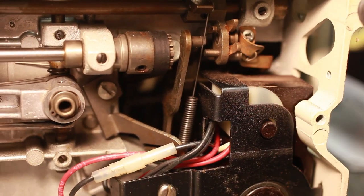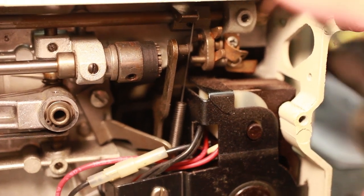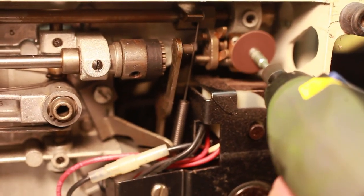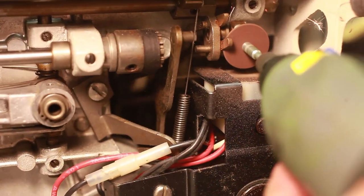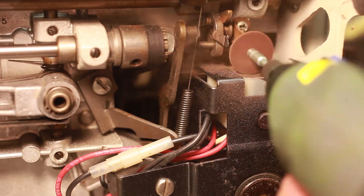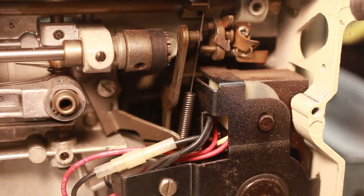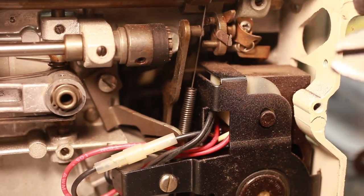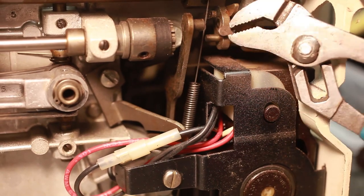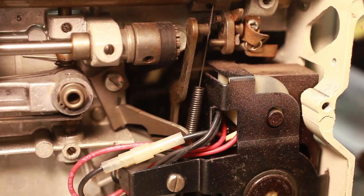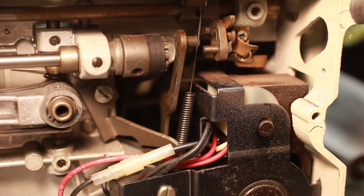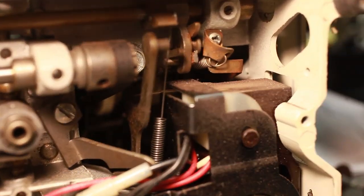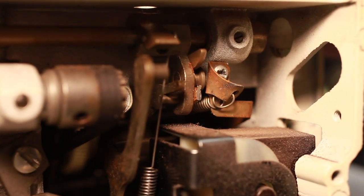I'll show you how we do that. We use a Dremel tool, high speed cutter. Keep in mind it's kind of hot so you don't want to handle it with your fingers. Now you see the fork is cut so you can get your shaft out right through this opening here.